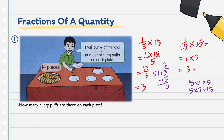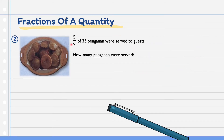Apabila murid-murid mahu selesaikan soalan macam ini, murid-murid boleh guna mana-mana cara pun — cara pertama ataupun cara kedua. Example number 2: 5 over 7 of 35 perganan. Perganan ini adalah kuih penjaram. Were served to guests. How many perganan were served? Di sini ada 35 biji kuih penjaram semua. 5 per 7 sahaja dihidang kepada tetamu. 5 per 7 ini berapa jumlah penjaram sebenarnya?